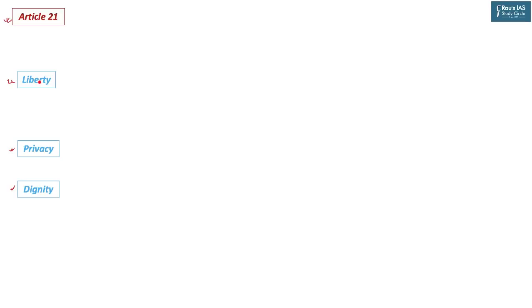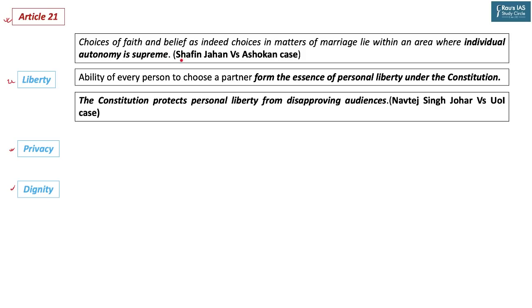We now check how intercaste, inter-religious, or same-sex marriages relate with liberty guaranteed under Article 21. In the Shafin Jaha versus Ashokan case — the Hadiya case — the Supreme Court said: 'Choice of faith and beliefs, as indeed choices in matters of marriage, lie within an area where individual autonomy is supreme.'